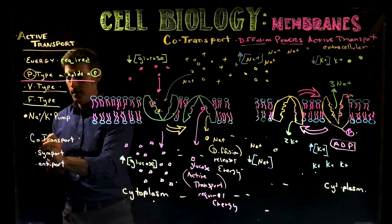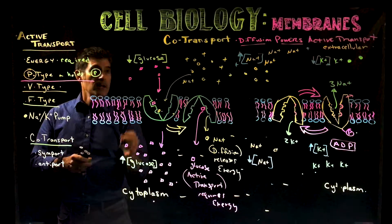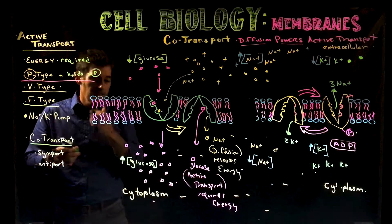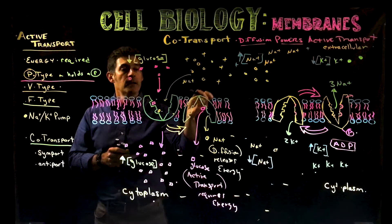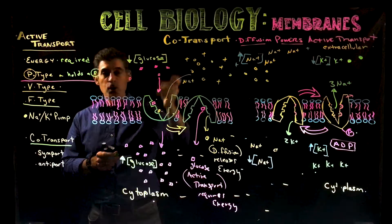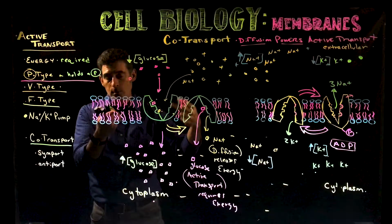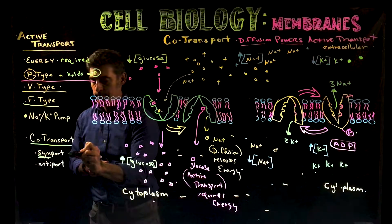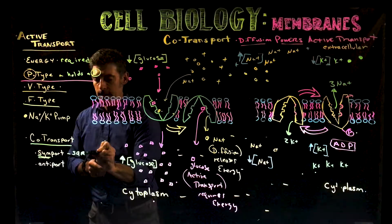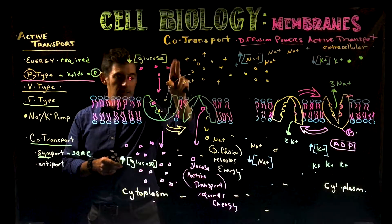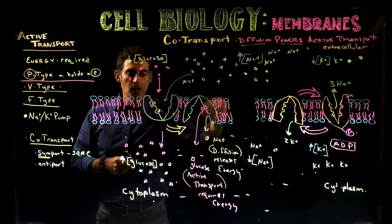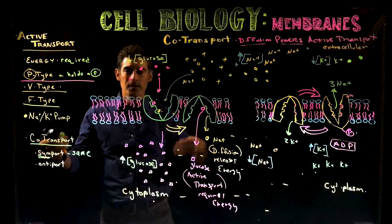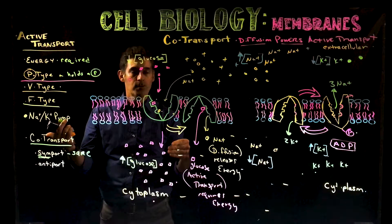Last thing to add: co-transport — diffusion powering active transport. Two additional terms: symport and antiport. Symport simply means the two things moving across the membrane are moving in the same direction — 'sym' means same. In this case, both glucose and sodium are moving from the outside of the cell to the inside of the cell — same direction. That's called symport. Symport is just a subtype of co-transport.